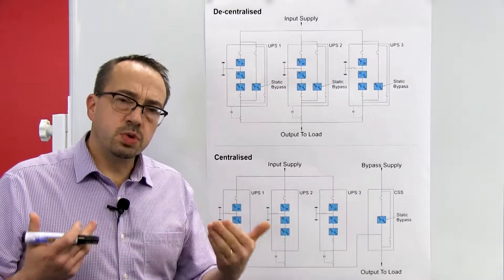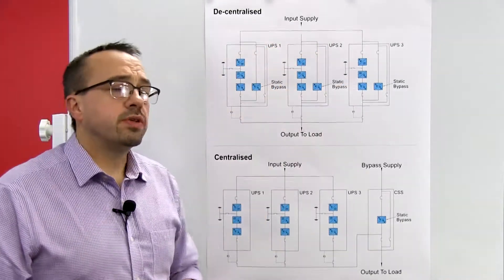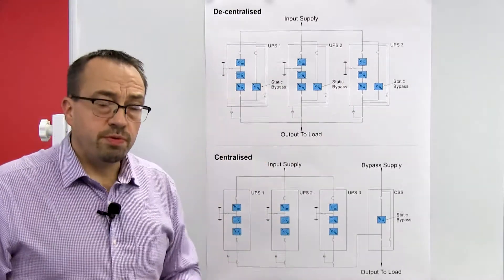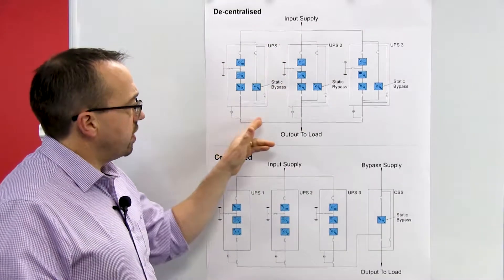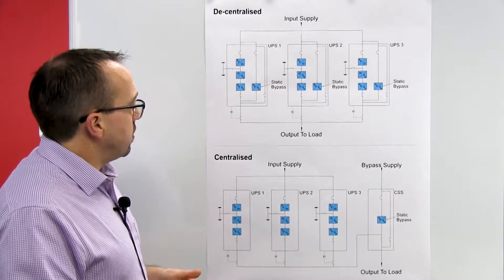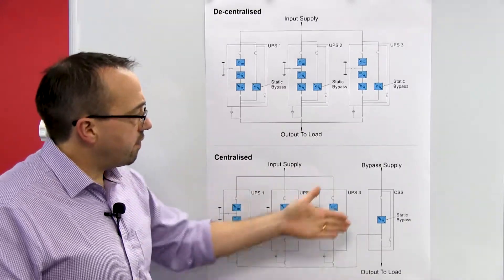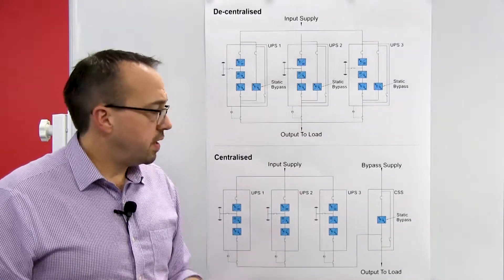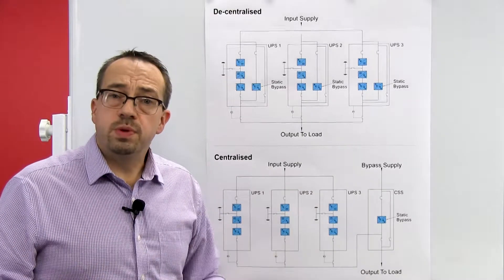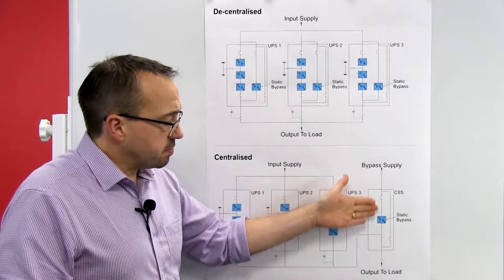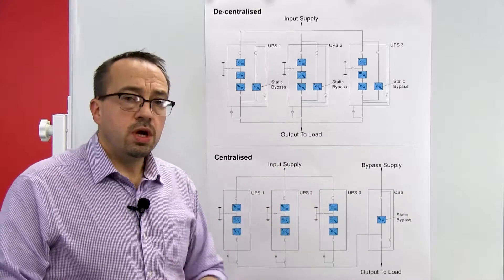You must also consider the switchgear requirements. In the decentralized system with a single supply input to each UPS, the breaker supplies both the rectifier and the bypass line, requiring only three input supply breakers and three outgoing load switches. However, with the centralized system you still have the same UPS input breakers and output switches, but the separate bypass cabinet requires an additional supply circuit breaker and output load switch — increasing switchgear cost. That bypass module must also be rated to the maximum power connected to the output, so the supply breakers to it could be significantly larger.